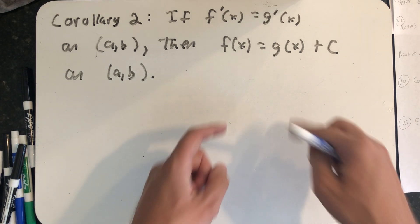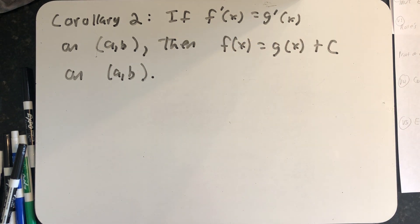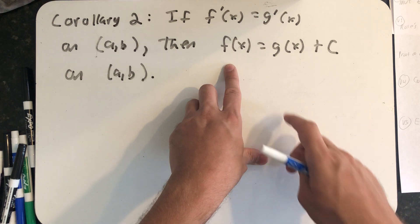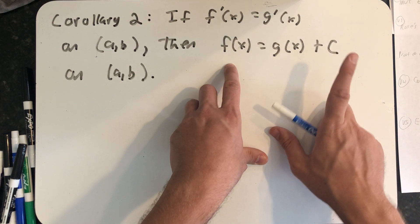The idea here is if I have two functions whose derivatives are always the same, then the functions differ by at most a constant.